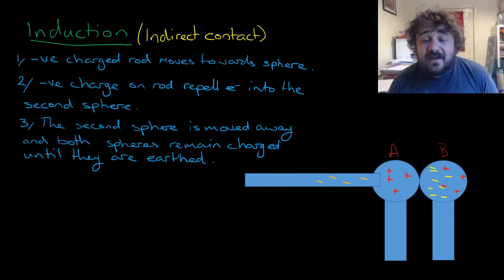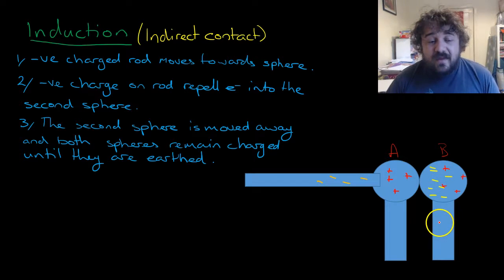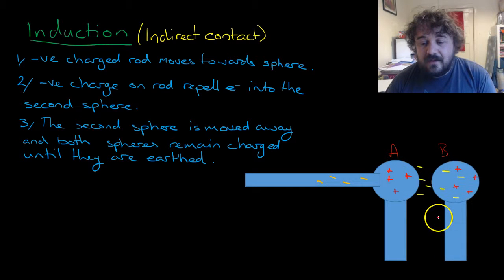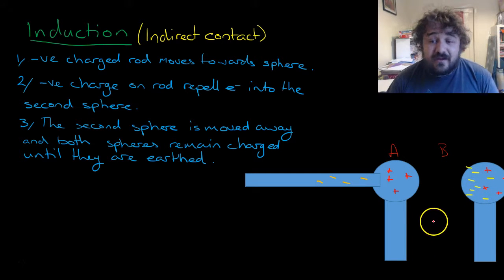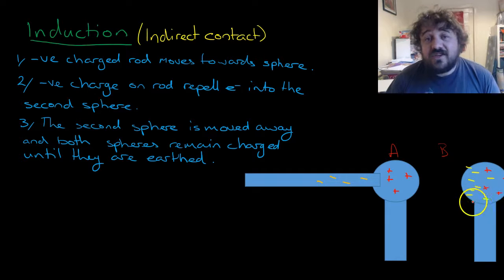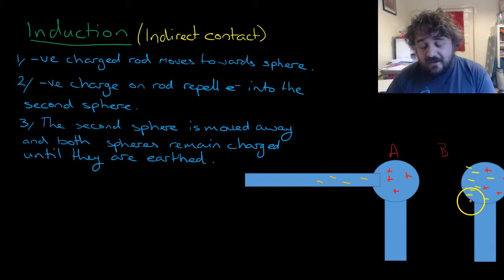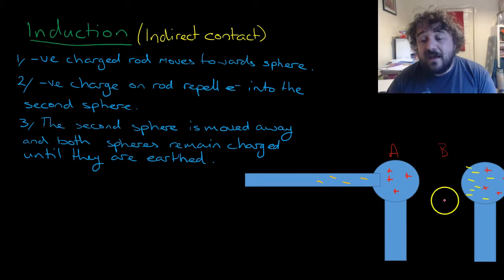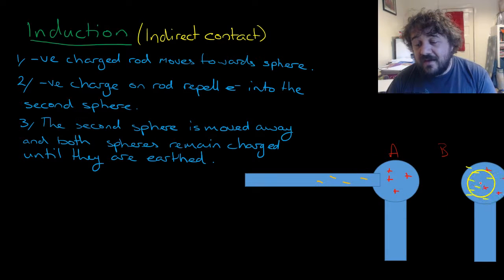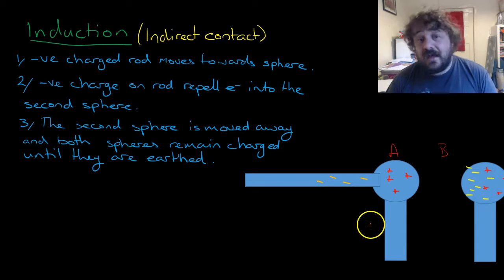And the second sphere is then moved away. So if we move away sphere B without earthing it, it will take those electrons with it. This object is now charged by induction, indirect contact. So we have contact being made, so conduction happens here, and we repel the electrons over here. This one is now charged, and that's it.